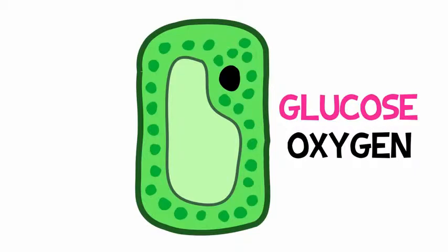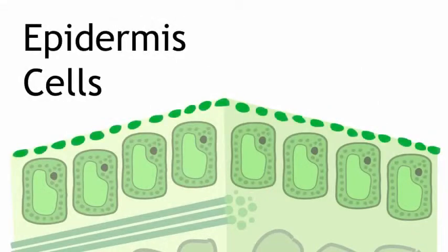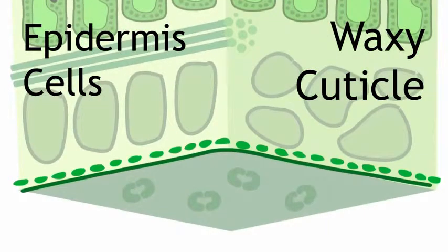But how does the leaf prevent unwanted intruders like bacteria from getting in, and stop important reactants from escaping? Above the palisade mesophyll and below the spongy mesophyll are epidermis cells, which produce a waxy coating called the cuticle. The cuticle seals up the leaf so that the only way in and out is through the stomata, which are regulated by those guard cells.